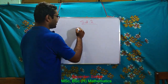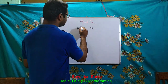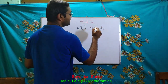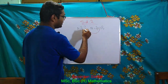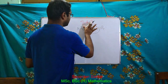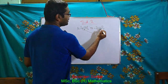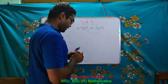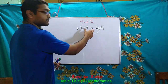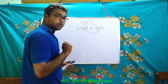We know that A and B are two sets. If all the elements of B are contained in A, then we say that B is a subset of A. Now here, three cases can arise.